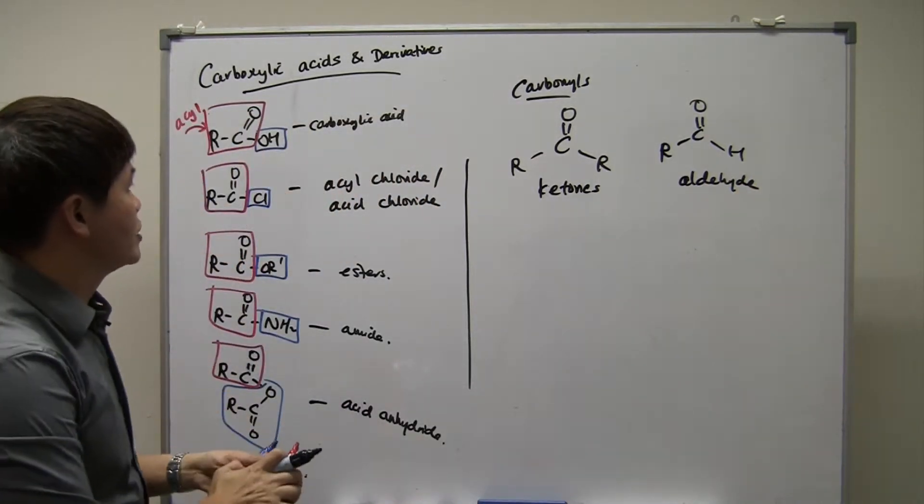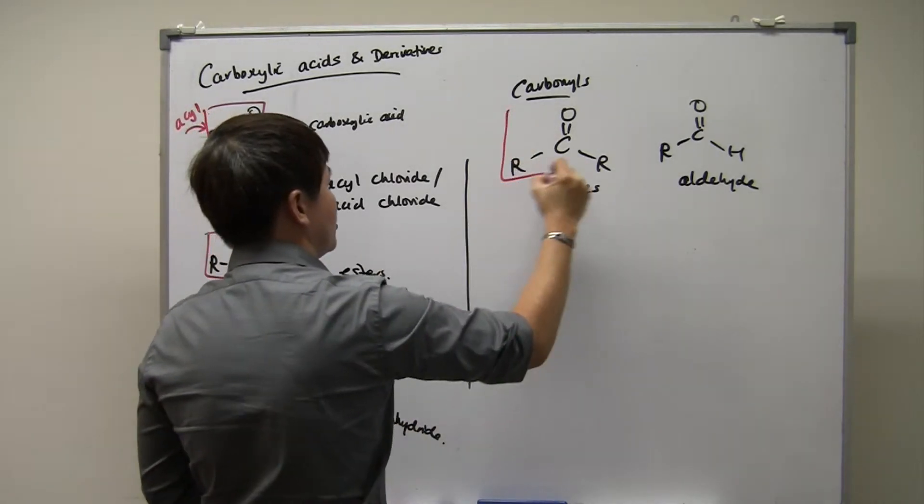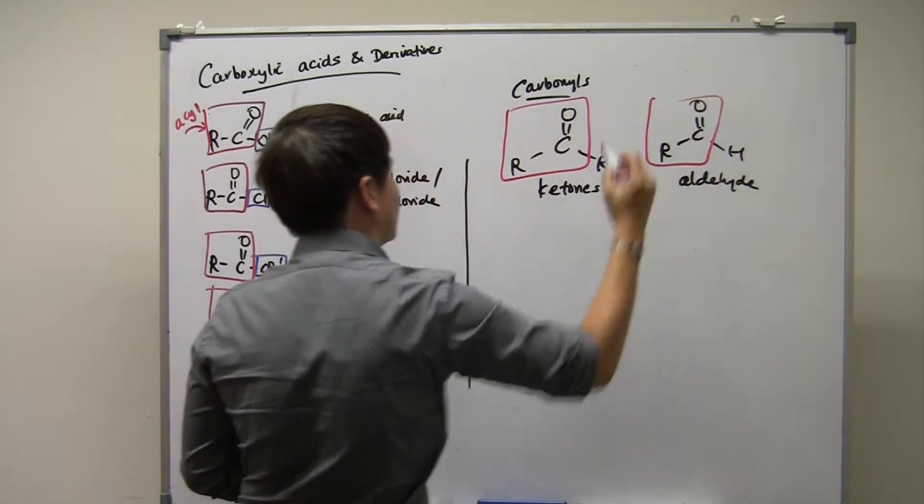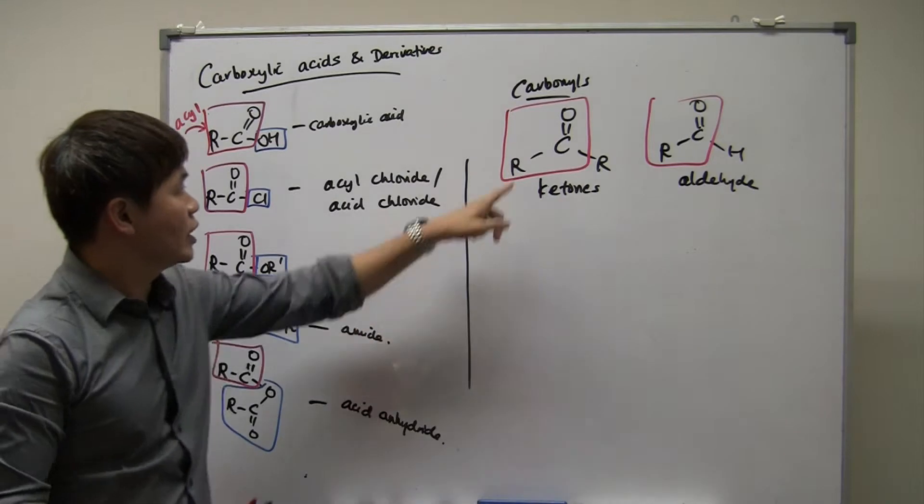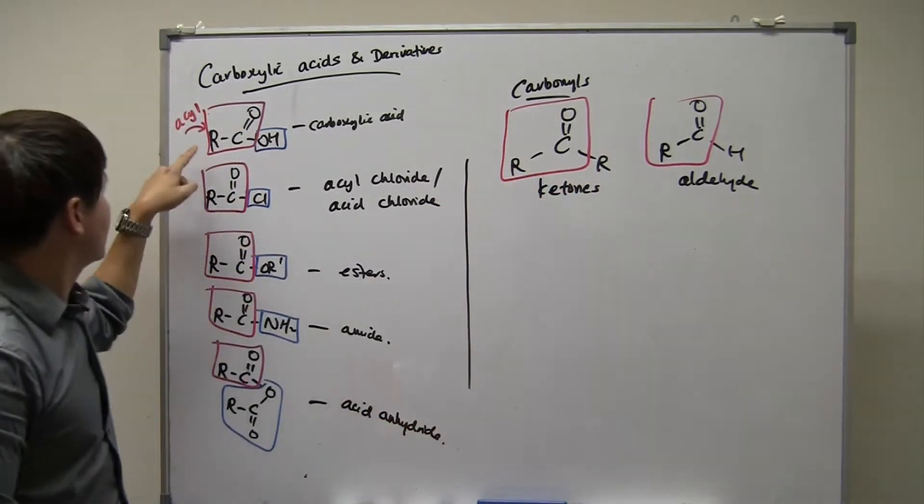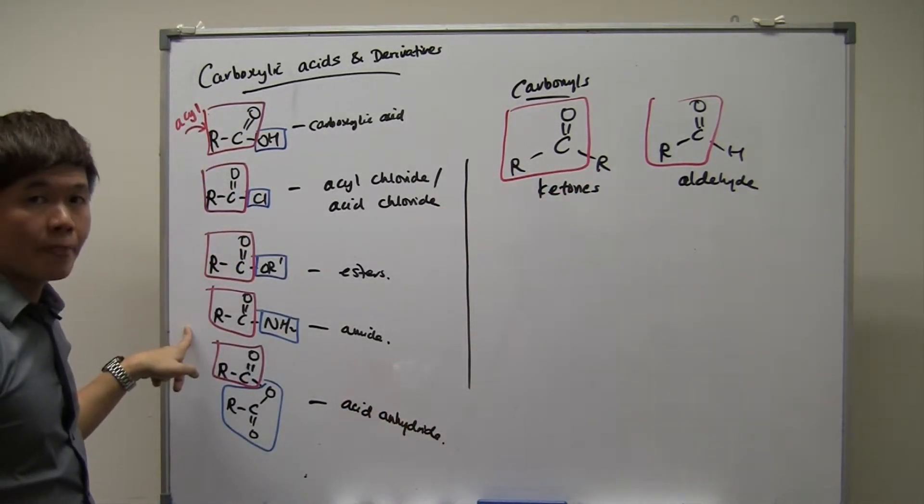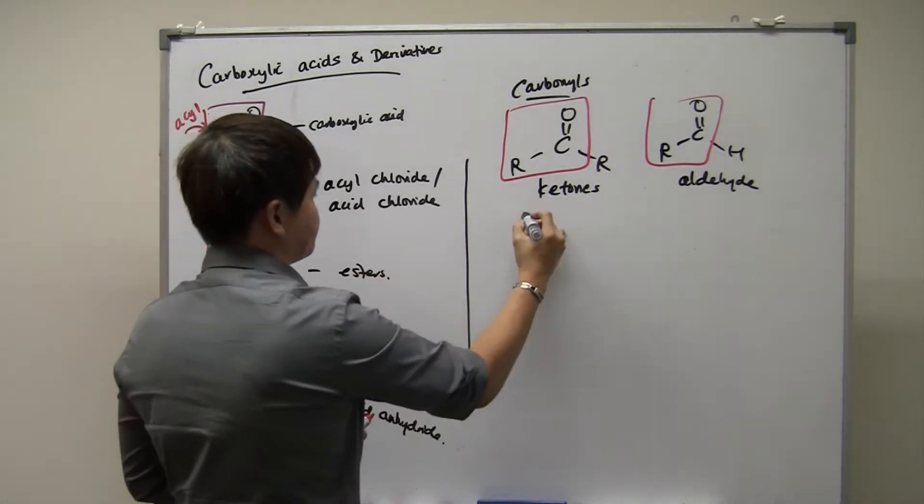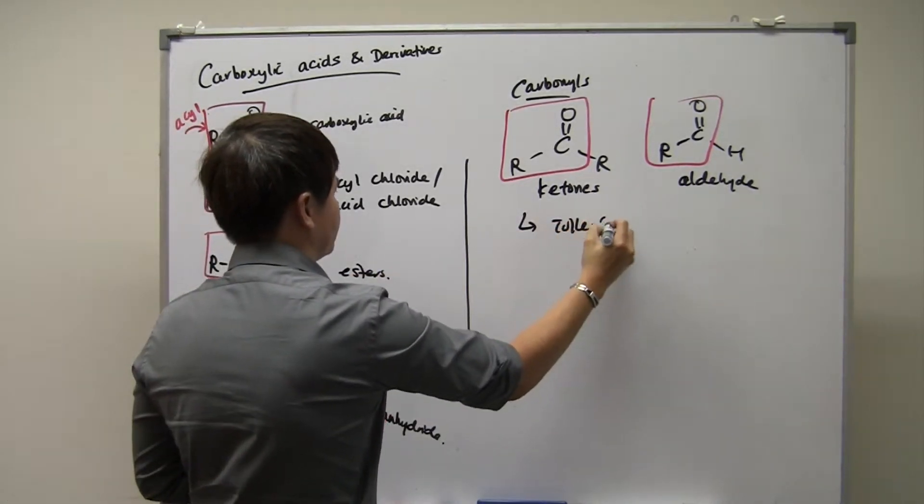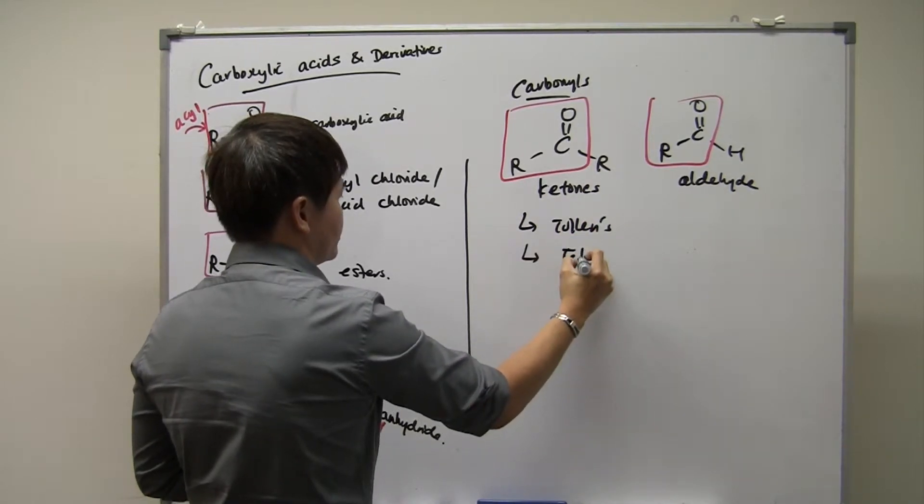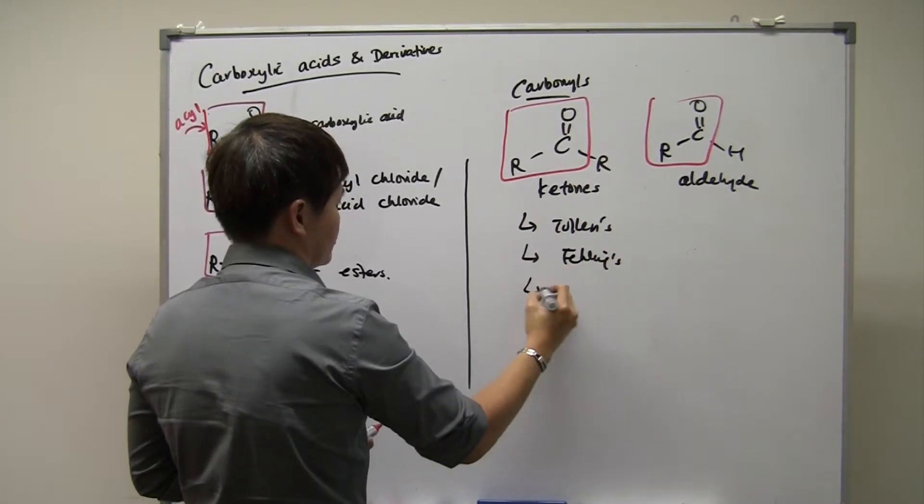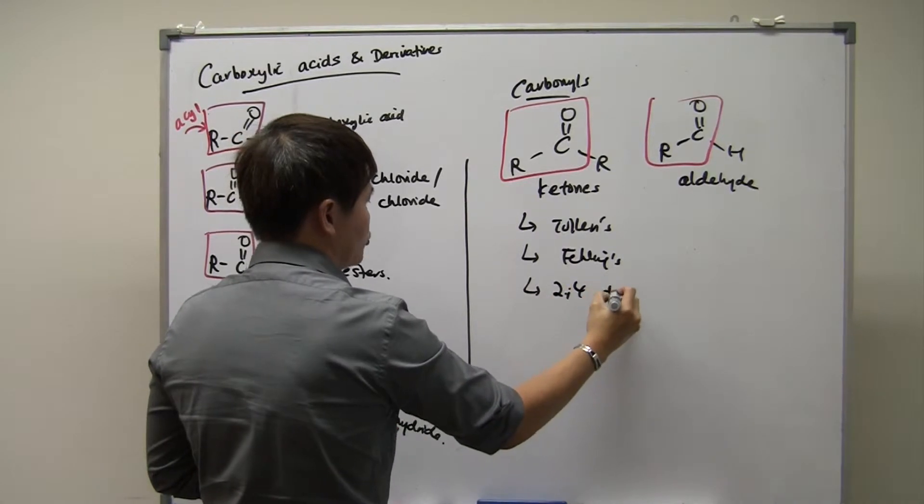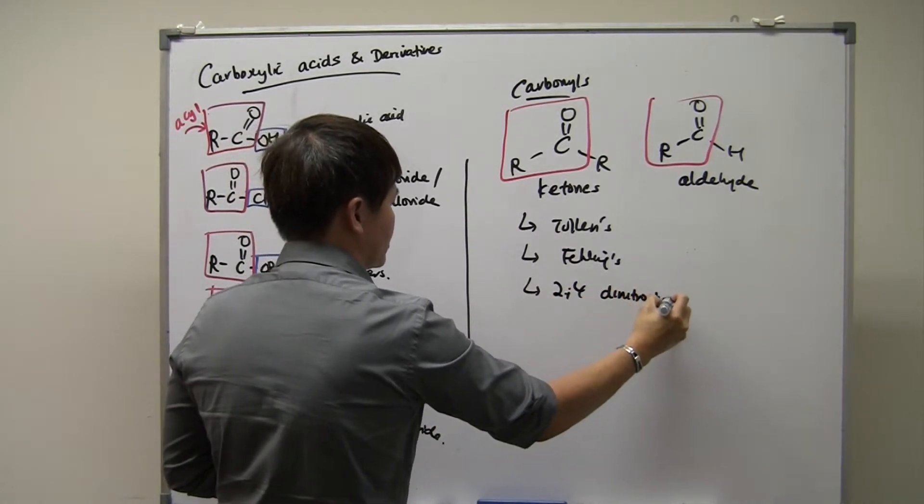If you take a hard look at carbonyls and the derivatives, you notice something very interesting. And that is, both chapters, the molecules contain both the RCO group. If you take a look here, the RCO group is found in carbonyls. The RCO group is also found in the derivatives and acids. But the funny thing is, the carbonyls undergo reactions like Tollens reagent, Fehling's reagent, 2,4-dinitrophenylhydrazine reactions.